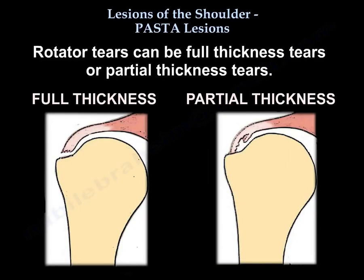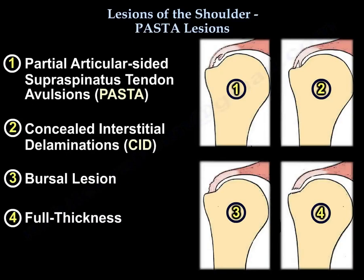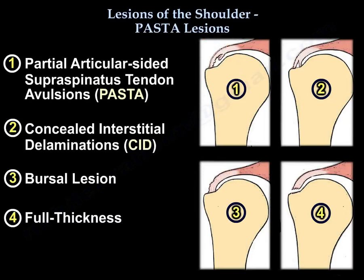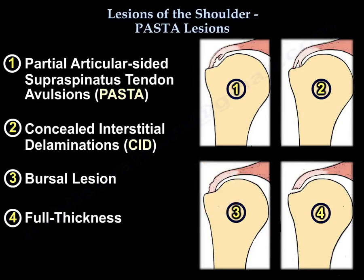Rotator cuff tears can be full thickness or partial thickness. The partial type can be a partial articular surface supraspinatus tendon avulsion — the PASTA lesion — which is an articular tear and the most common type. Or it can be a bursal tear, called a reverse PASTA lesion. Or it can be a concealed interstitial delamination, also known as an intersubstance tear.